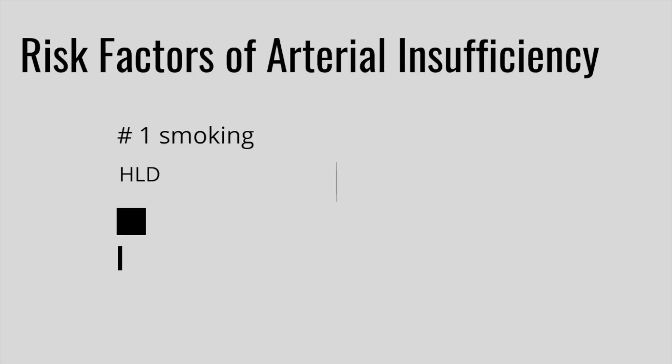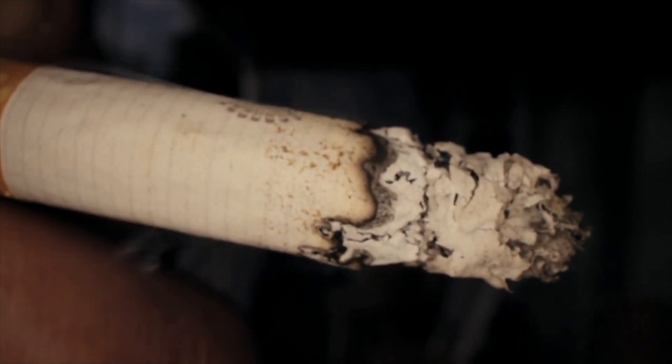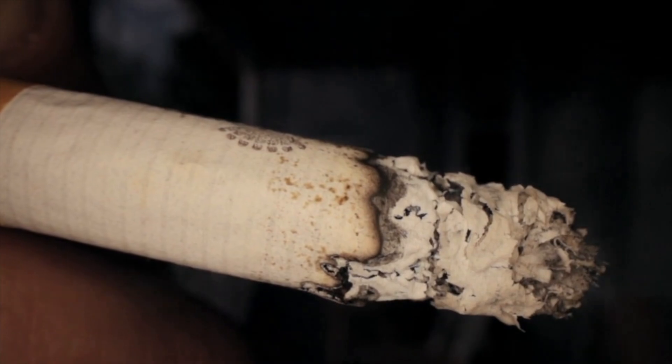Let's talk about the risk factors that lead to arterial insufficiency ulcerations. Number one is smoking. Nicotine causes vasoconstriction, meaning there's reduced blood supply going into that area. Smoking is a modifiable risk factor, and we should encourage our patients to cut down or quit, even though we know addiction is hard to overcome.